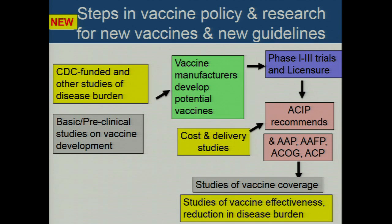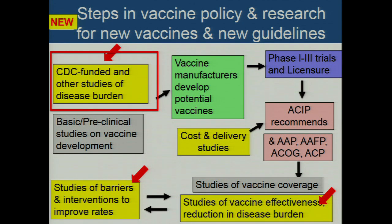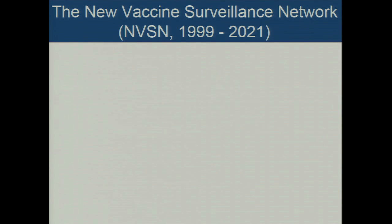A second addition is cost studies and delivery studies that feed into ACIP recommendations. Then there are studies of vaccine effectiveness and reduction in disease burden — you need more than phase one through three trials; you need to know if the vaccine works in the real world. And if vaccination rates are low, we need studies of barriers and interventions to improve rates. I think this new model has really helped the process of national guidelines.